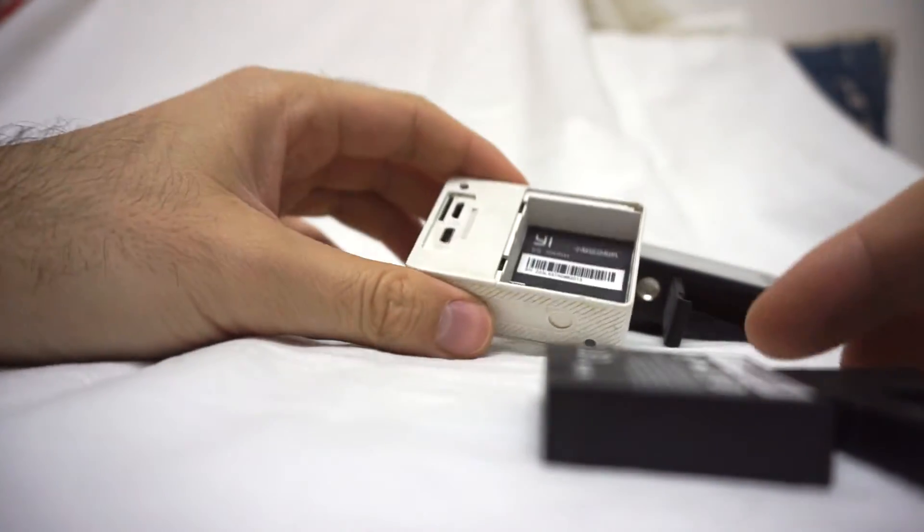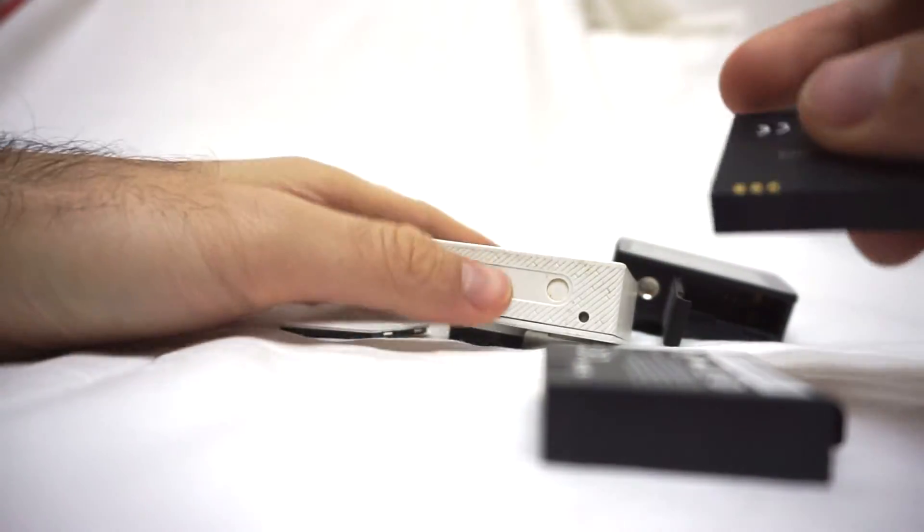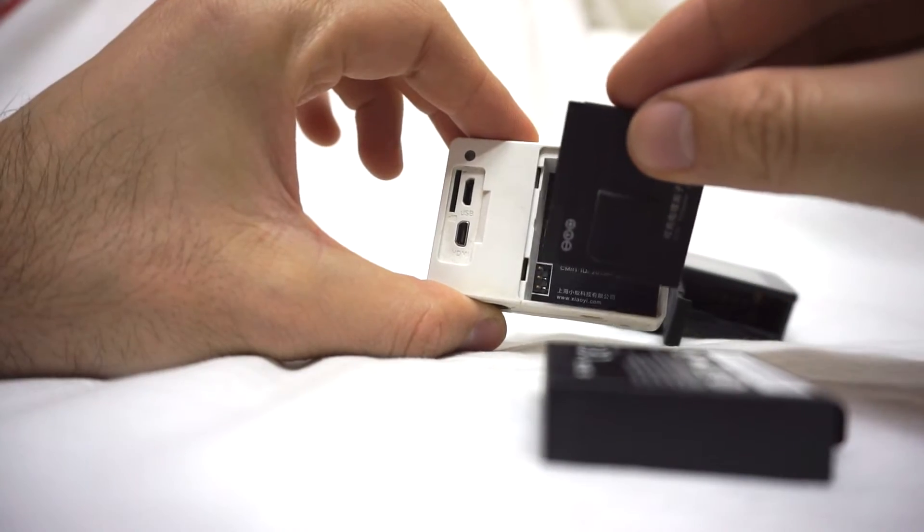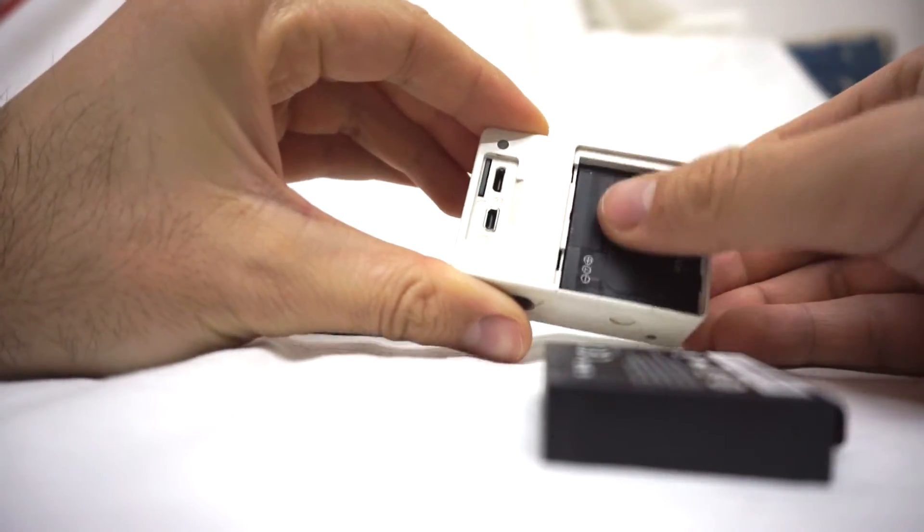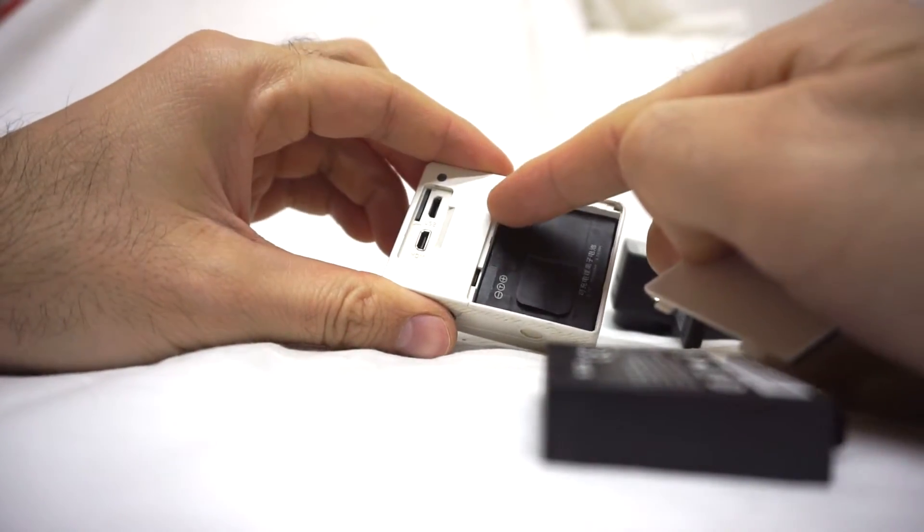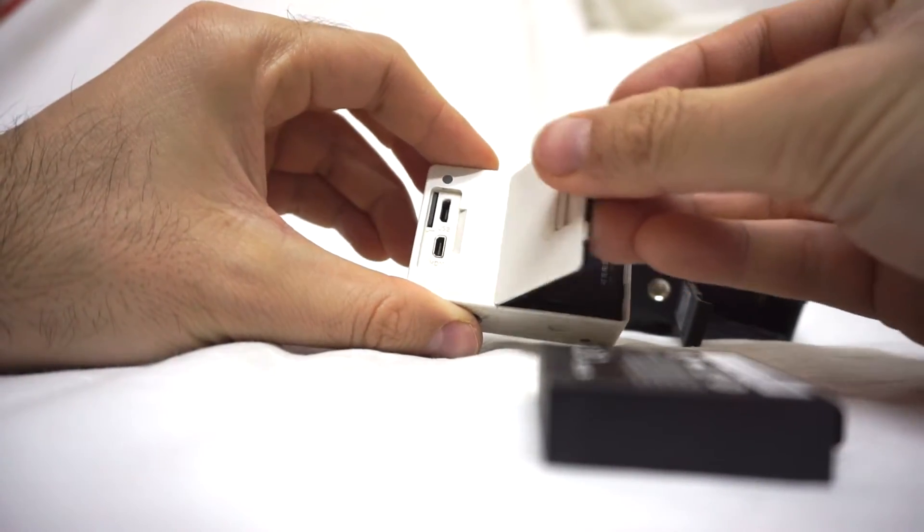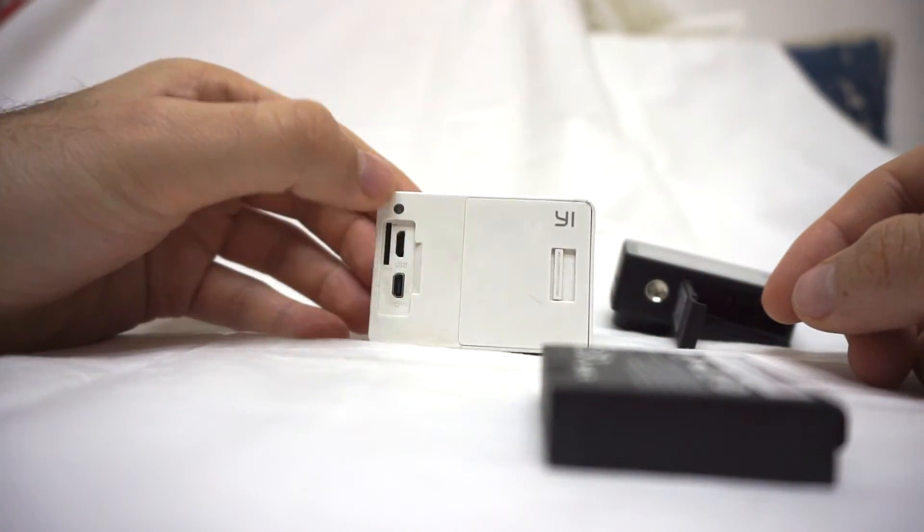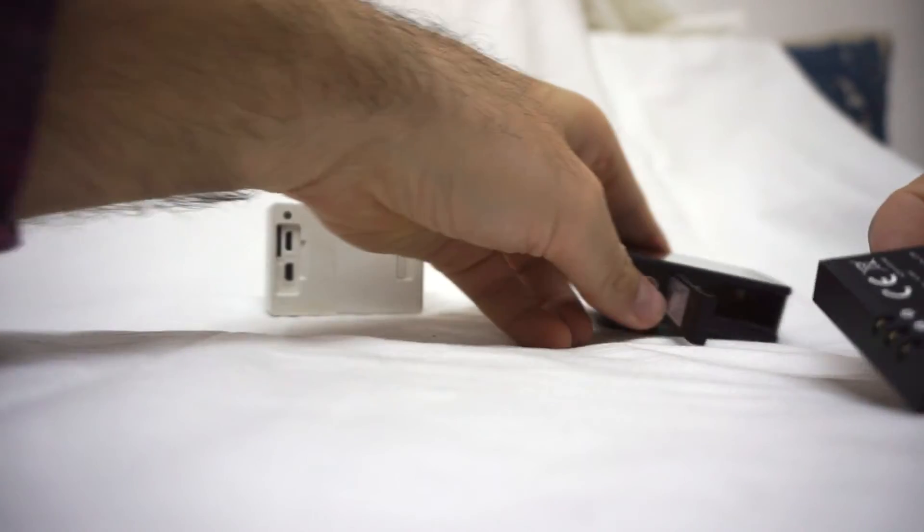Okay, so let's put them back. Contacts to those contacts, so simply push it in. These two things have to enter there like so, and just push on the other side. That's it, that's the YI One.